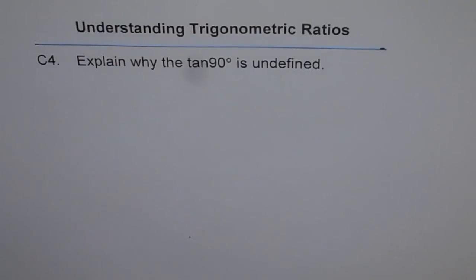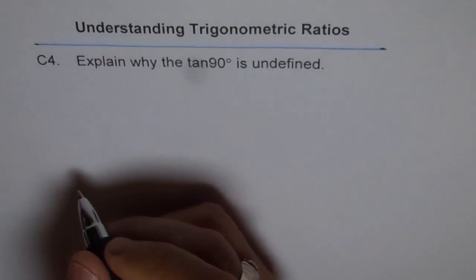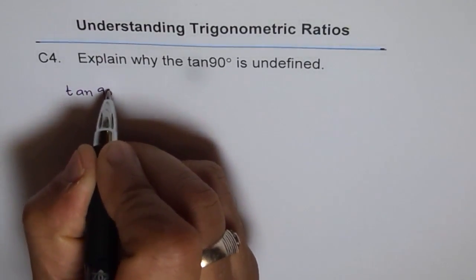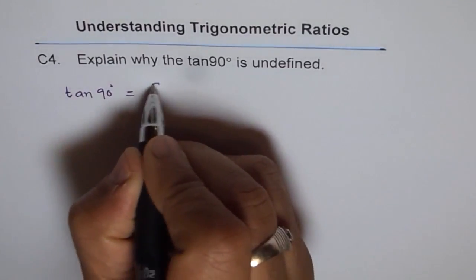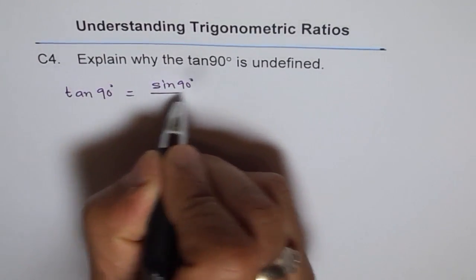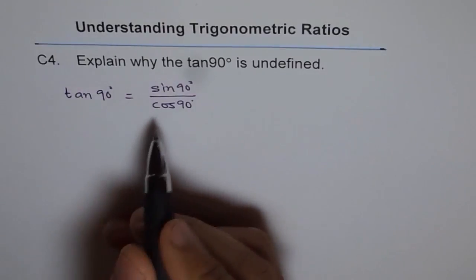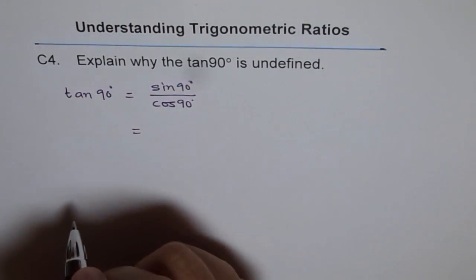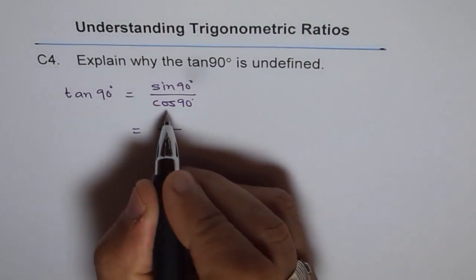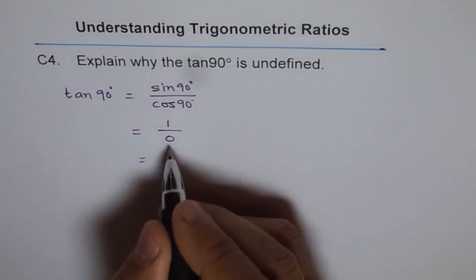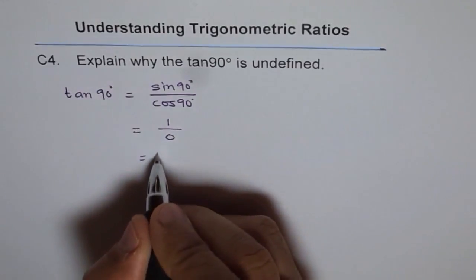The question says: explain why tan 90 degrees is undefined. We can answer this in a couple of ways. A straightforward explanation is: tan 90 degrees equals sin 90 degrees over cos 90 degrees, since tan is the ratio of sine and cosine. Sin 90 degrees is 1 and cos 90 degrees is 0. Anything divided by zero is undefined, so this has no meaning — therefore tan 90 degrees is undefined.